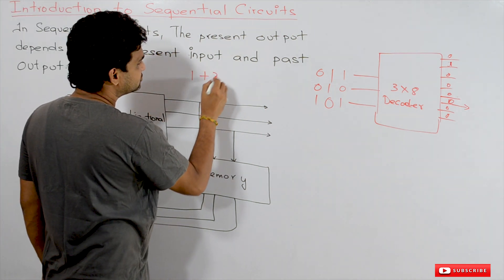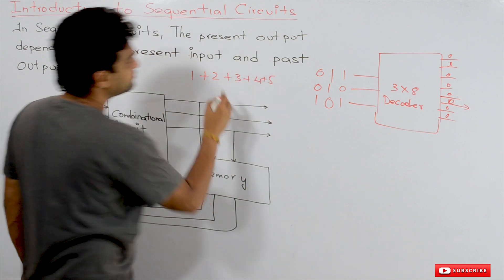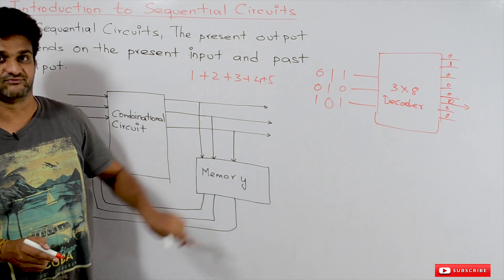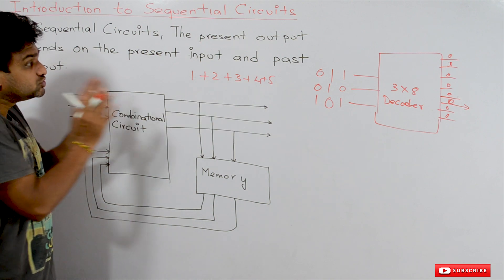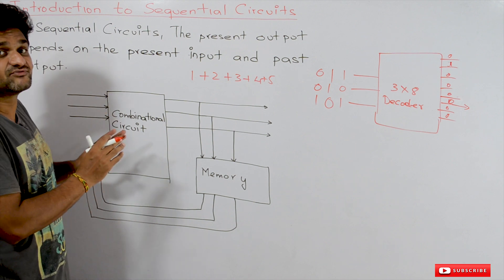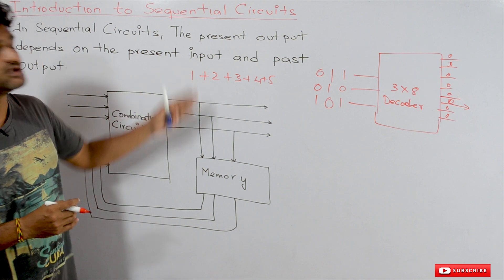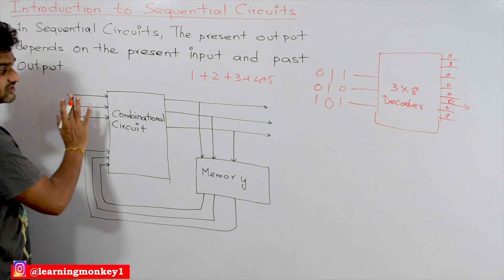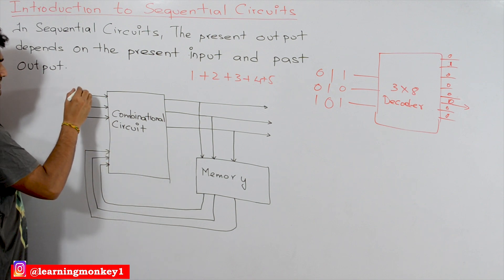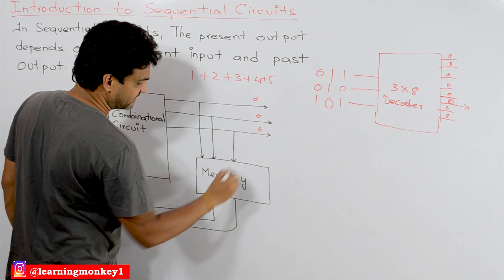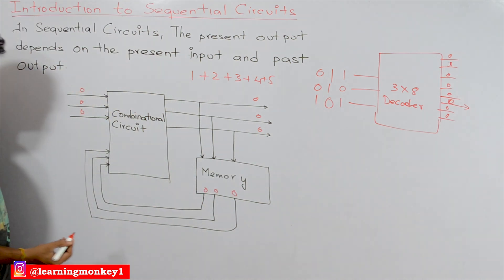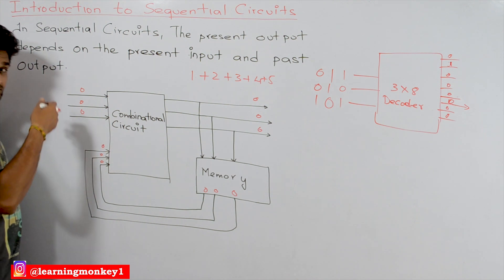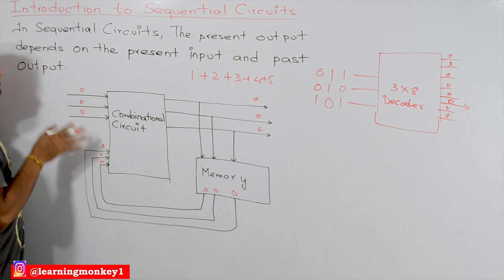The best way to understand this is with an example. If you want to add 1, 2, 3, 4, 5 — the final output should be their sum. This calculation can be done on a sequential circuit. Initially, all values are zero: the present input is zero, the output is zero, and the values stored in memory are also zeros.